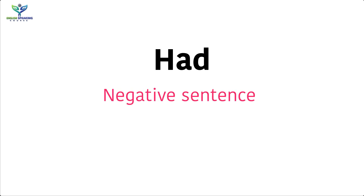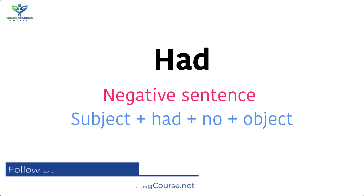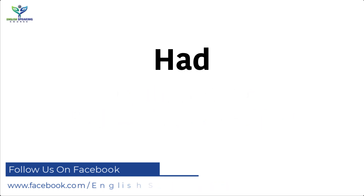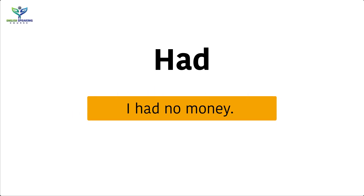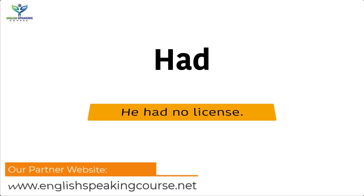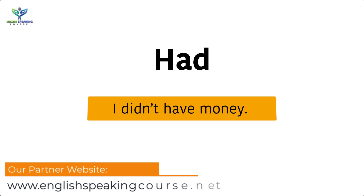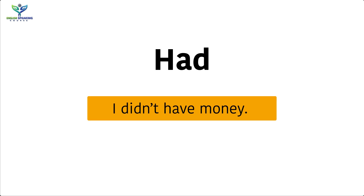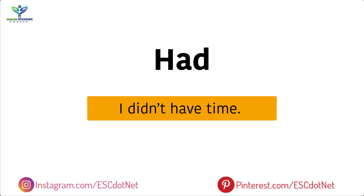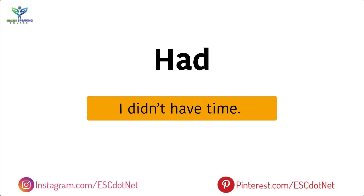How to create a negative sentence using 'had'? The sentence structure is: subject + had + no + object. For example: I had no money. He had no license. I didn't have money. I didn't have time.